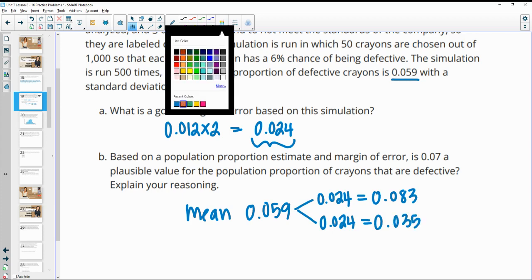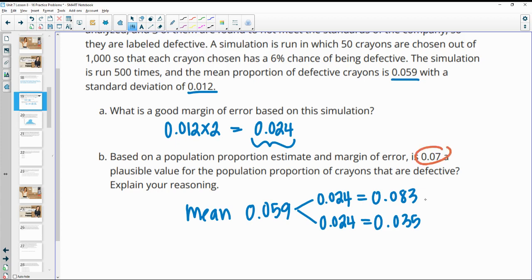And then we see that 0.07, the value in question, 0.07 is in this margin, okay? So it's within this interval. So yes, 0.07 is within the margin of error.